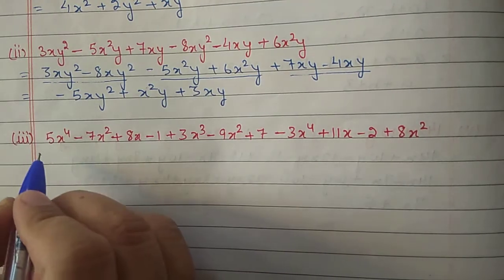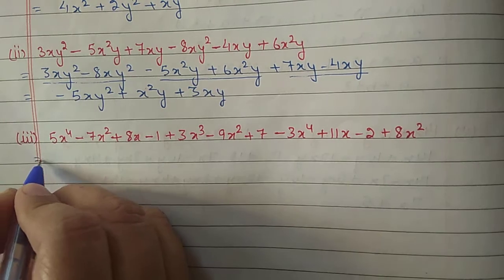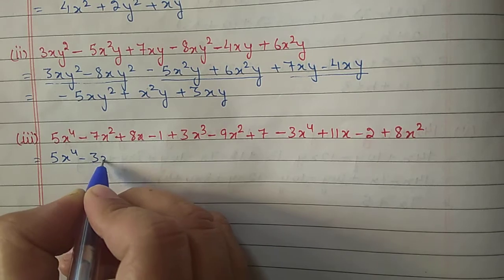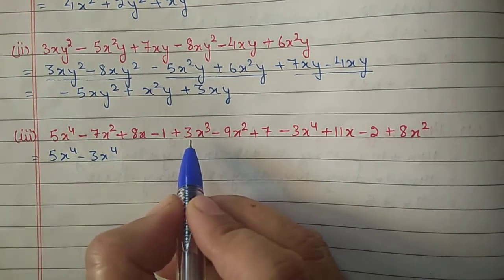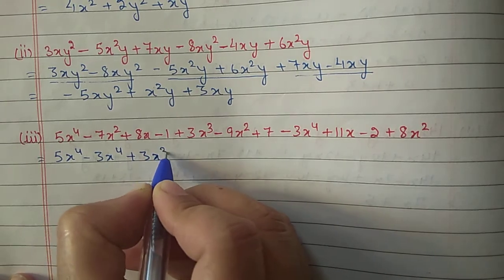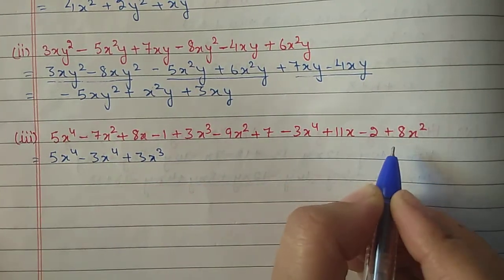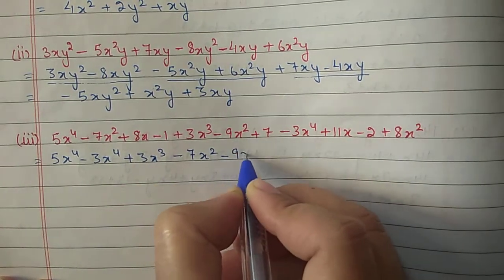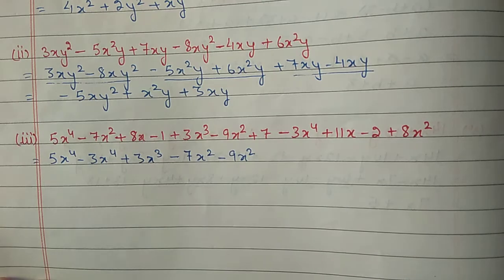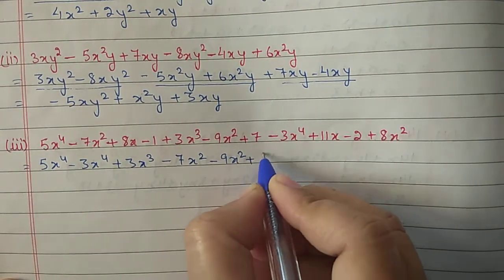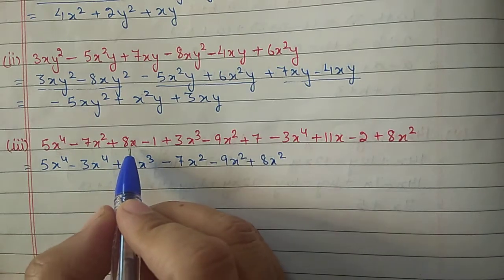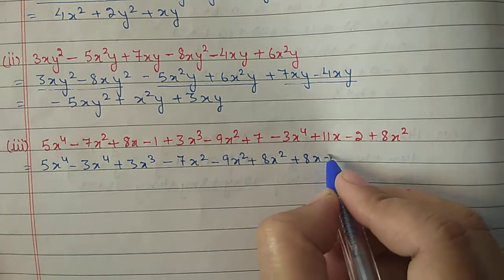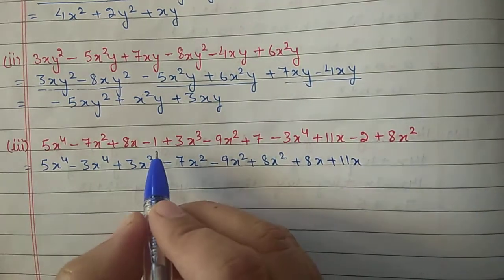Third part: taking like terms together: 5x to the power 4 and minus 3x to the power 4; then x to the power 3 and plus 3x to the power 3 with no other x cube terms; then x square, minus 7x square, minus 9x square, and plus 8x square; then plus 8x and plus 11x; constant terms minus 1, plus 7, and minus 2.